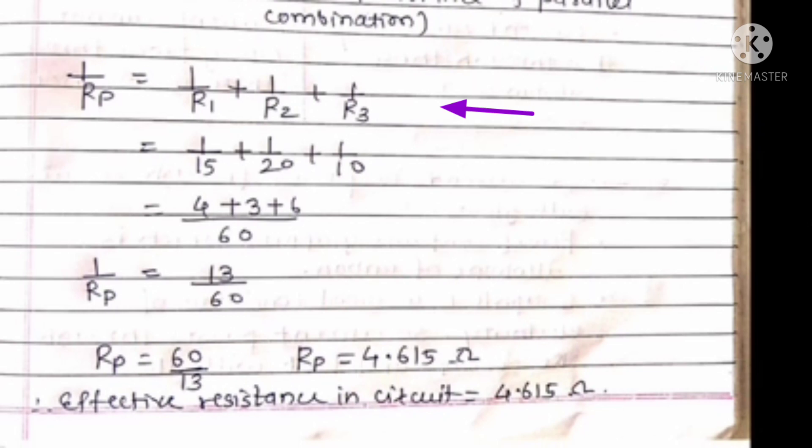We have formula: 1 by Rp equals 1 by R1 plus 1 by R2 plus 1 by R3. Putting the values: 1 by 15 plus 1 by 20 plus 1 by 10. LCM is 60. So 4 plus 3 plus 6. 1 by Rp equals 13 divided by 60. Then Rp equals 60 divided by 13. Divide 60 by 13, we get 4.615 ohm. So effective resistance in the circuit is 4.615 ohm.